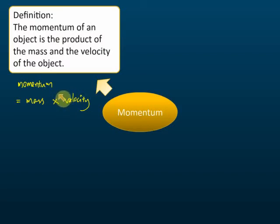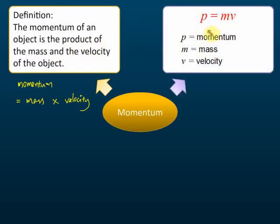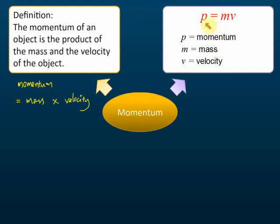For some definitions, you can give it as a formula — momentum equals mass times velocity. However, you cannot give it in symbols. This is the formula for momentum: p equals m times v, where p is momentum, m is mass, and v is velocity. But if they ask for the definition, you cannot write p equals mv using symbols — you will get no mark for that.